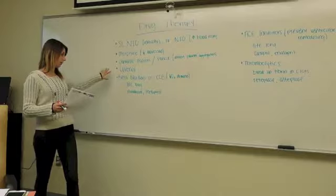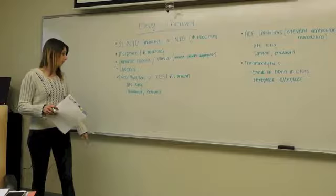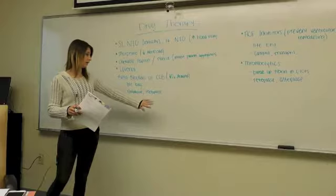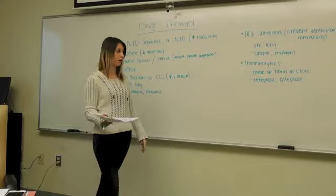They also may be started on beta blockers or calcium channel blockers. This is going to decrease the O2 demand to the heart. This is usually a lifelong therapy that they'll go home with. Examples are amlodipine or metoprolol. They also may be on ACE inhibitors if they cannot be on beta blockers or calcium channel blockers. This is also lifelong. This is going to prevent the ventricular remodeling. Some examples are captopril or enalapril.